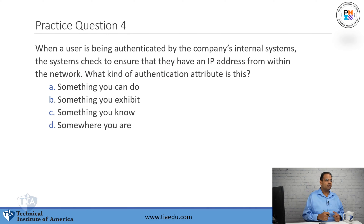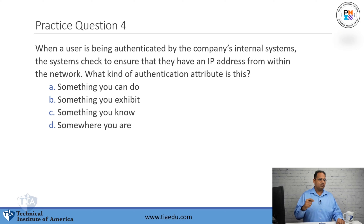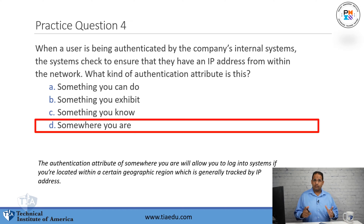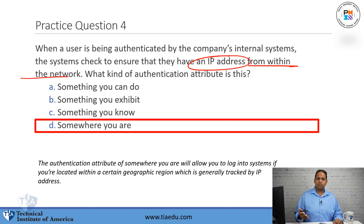Practice question four: when a user is being authenticated by the company's internal systems, the systems check to ensure that they have an IP address from within the network. What kind of authentication attribute is this? A, something you can do. B, something you exhibit. C, something you know. D, somewhere you are. The answer is 'somewhere you are.' This is a type of location-based authentication because you have to have an IP address from within that particular network. The others are different forms of authentication method, but not this one.